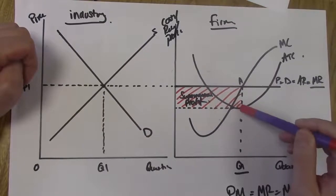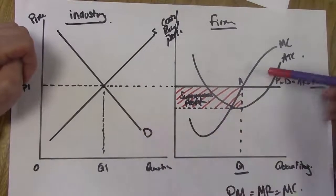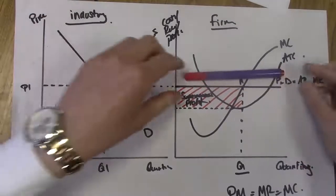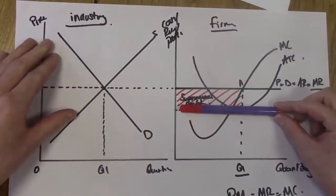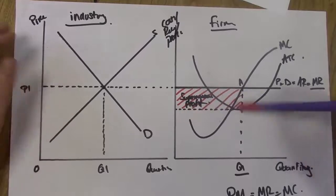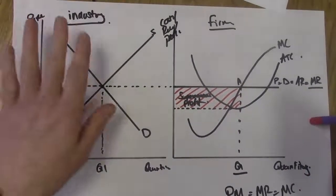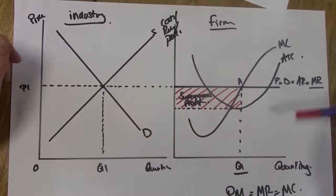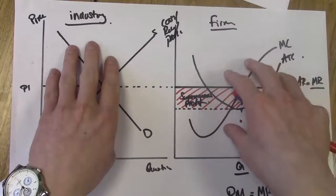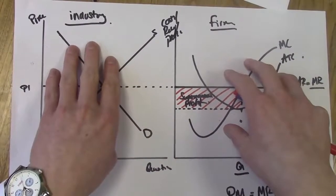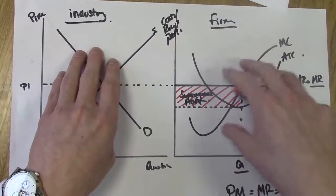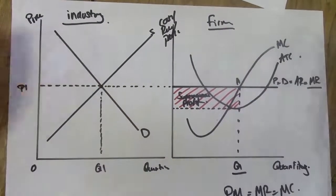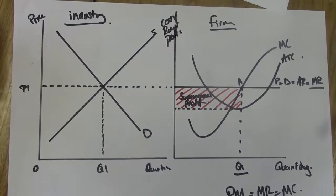This supernormal profit acts as an incentive for new firms to enter the industry. As a result, supply will increase, pushing down the price equals demand equals AR equals MR curve — this curve is pushed downwards because of changes in price determination in the industry. Key discussion points are price determination and profit maximization: the firm cannot determine its price but still makes a profit based on the fact that it accepts the market price.